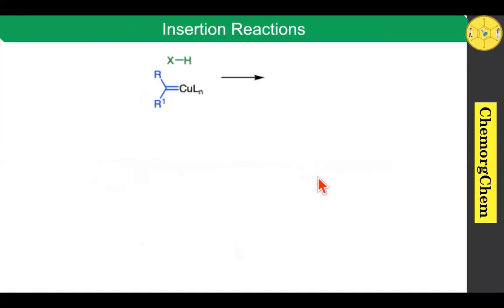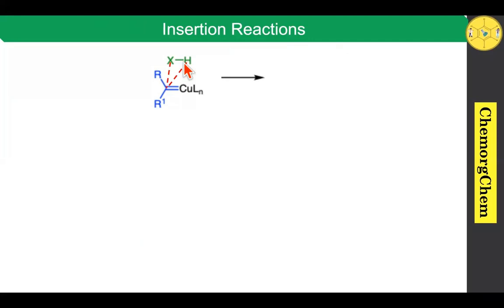Next, we move on to the third important application: insertion reactions. When you take the copper carbene, it can react with C–H, N–H, as well as O–H bonds. This center forms a bond to X and one more bond to H at the same time while the X–H bond breaks, which leads to the insertion products. The first one is C–H insertion.